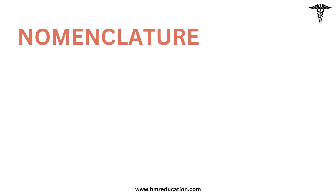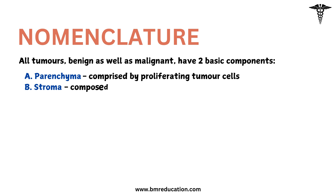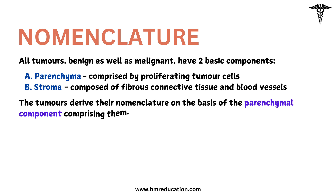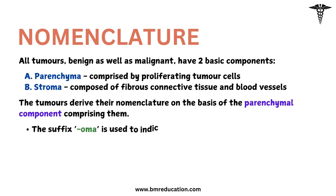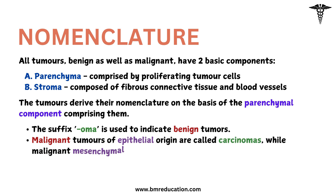Let's look into the nomenclature and types of neoplasms. Neoplasms or tumors may be benign or malignant. All tumors, benign as well as malignant, have two basic components: parenchyma and supportive stroma. Parenchyma is comprised of proliferating tumor cells, while supportive stroma is composed of fibrous connective tissue and blood vessels. Tumors derive their nomenclature on the basis of the parenchymal component comprising them. The suffix -oma is used to indicate benign tumors. Malignant tumors of epithelial origin are called carcinomas, while malignant mesenchymal tumors are named sarcomas.